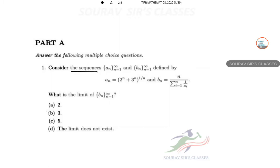Consider the first question. Consider sequence {a_n} from n=1 to infinity and {b_n} from n=1 to infinity, defined by a_n = (2^n + 3^n)^(1/n) and b_n = n / Σ(1/a_i). What is the limit of {b_n} from n=1 to infinity?